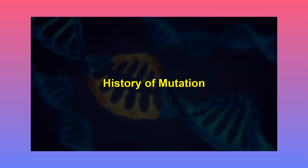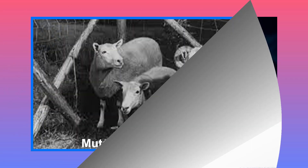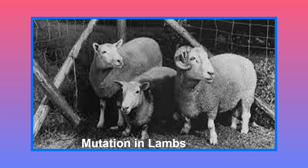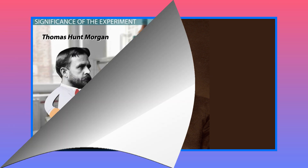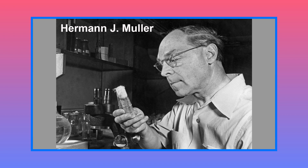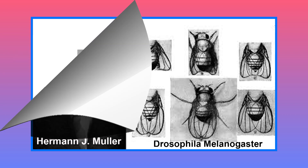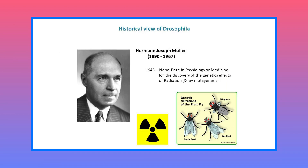The term mutation was coined by Hugo de Vries in 1890. However, before him, Seth Wright, an English farmer, noticed a mutation first time in his unusual short-legged male lambs during 1791. After the finding of Hugo de Vries, the mechanism of mutation was studied by Morgan in 1910. In 1927, H.J. Muller performed experiments of artificial mutagenesis. Using X-rays, he introduced mutation in Drosophila. For that, he was awarded the Nobel Prize in 1946.